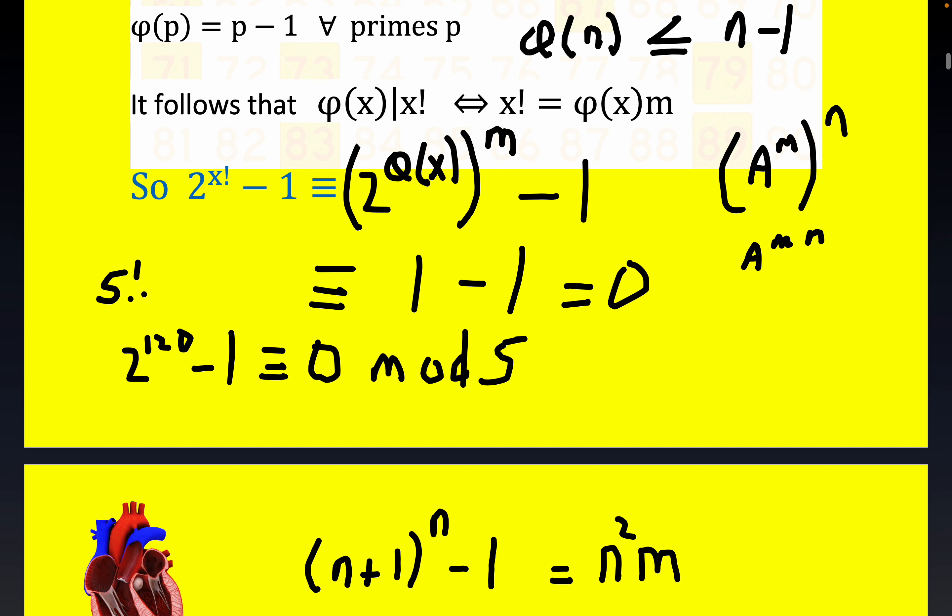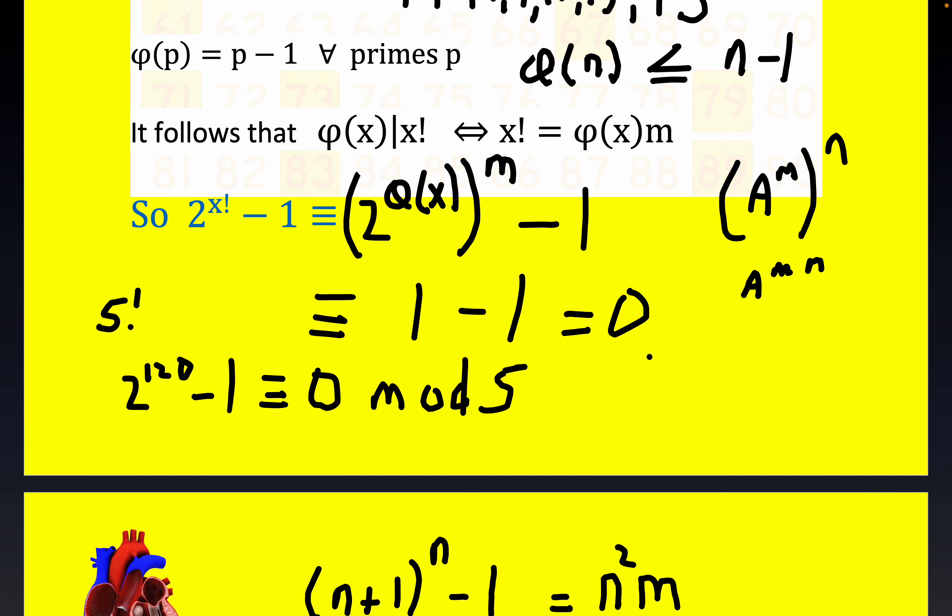So, and again, for all other odd, not just primes, like 2 to the 15th, 2 to the 15 factorial minus 1 would be congruent to 0 mod 15, also any other odd number. But anyway, it's QED time right here.